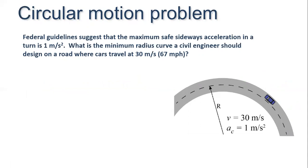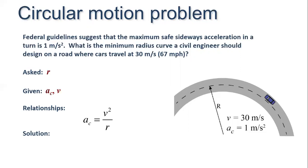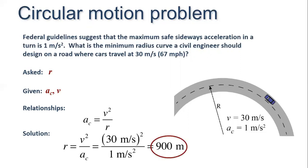Here is a mathematical problem. Given: acceleration a = 1 m/s² and velocity v = 30 m/s. We need to calculate radius r. Using ac = v²/r, and substituting all values, we solve the problem. The radius of the circle is 900 meters.